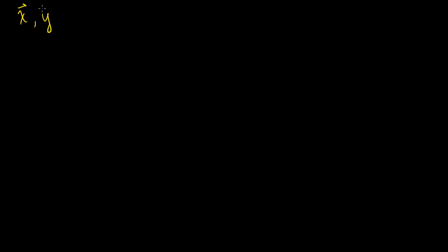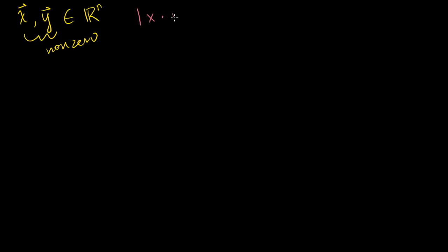Let's say I have two non-zero vectors. The first vector is x, the second vector is y. They're both in the set Rⁿ, and they're non-zero. It turns out that the absolute value of their dot product — and remember, this is just a scalar quantity — is less than or equal to the product of their lengths. We've defined the dot product and we've defined lengths already.